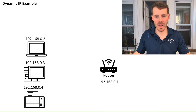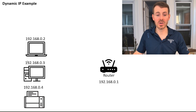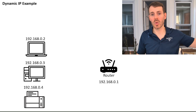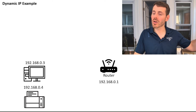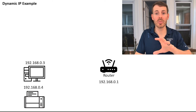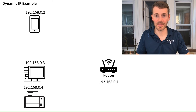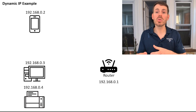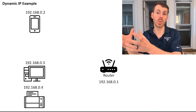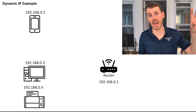Let's walk through an example. In your home network you have your router at 192.168.0.1, a laptop at 192.168.0.2, a desktop at 192.168.0.3, and a printer at 192.168.0.4. Now let's say you take your laptop to work and it leaves the home network. During this time, your friend comes to your house and connects with a mobile device. That same 192.168.0.2 IP address gets assigned to your friend's phone because when you left, that IP address went back into the pool of available addresses.